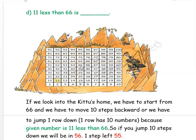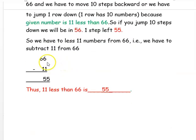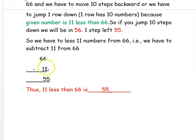We can also find this using subtraction: 66 minus 11 — 6 minus 1 is 5, and 6 minus 1 is 5 — so 11 less than 66 is 55.